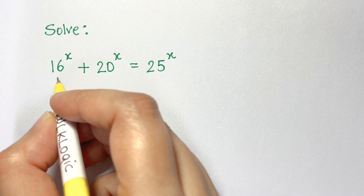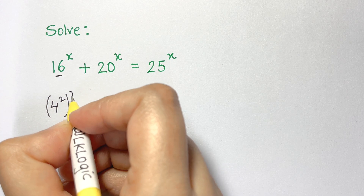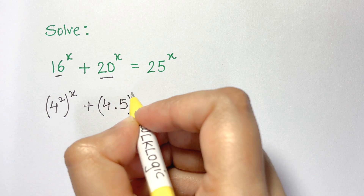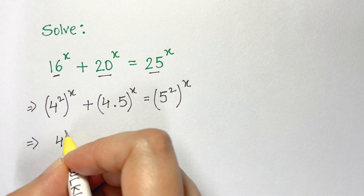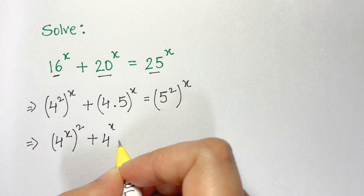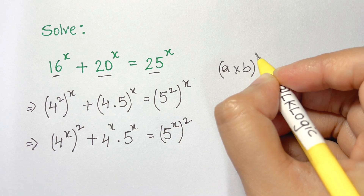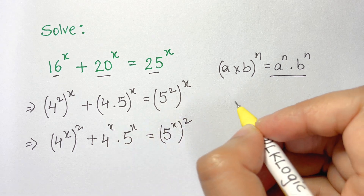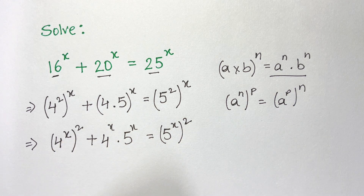Here, 16 can be written in terms of base 2: 4 squared is 16. So we write (4²)^x plus 20, which can be written as 4 times 5, whole to the power of x, equals 25, written as (5²)^x. Now we get (4^x)² plus 4^x times 5^x equals (5^x)². Recall that (a·b)^n = a^n · b^n, and (a^n)^p = a^(n·p).